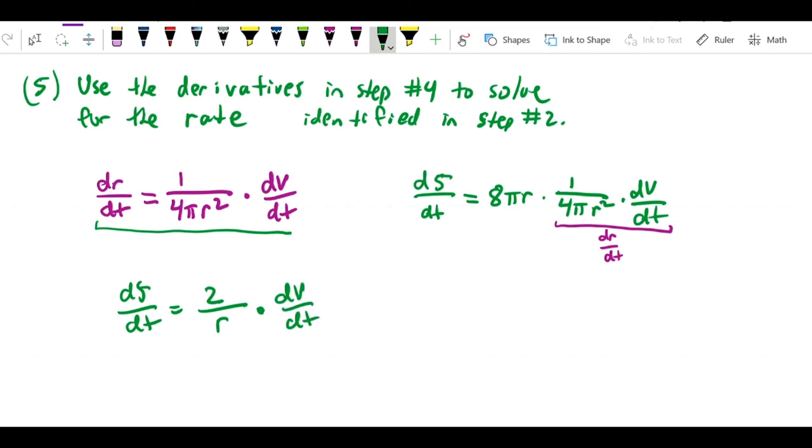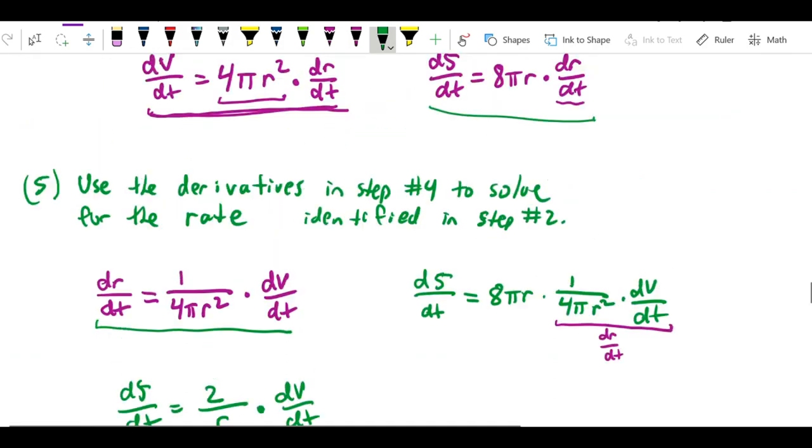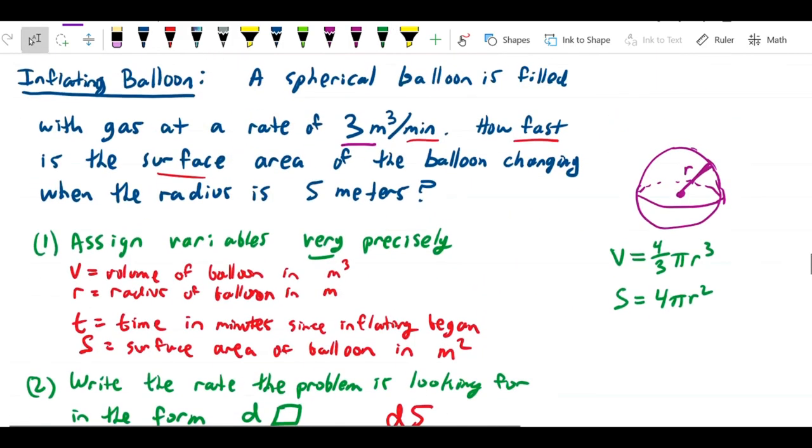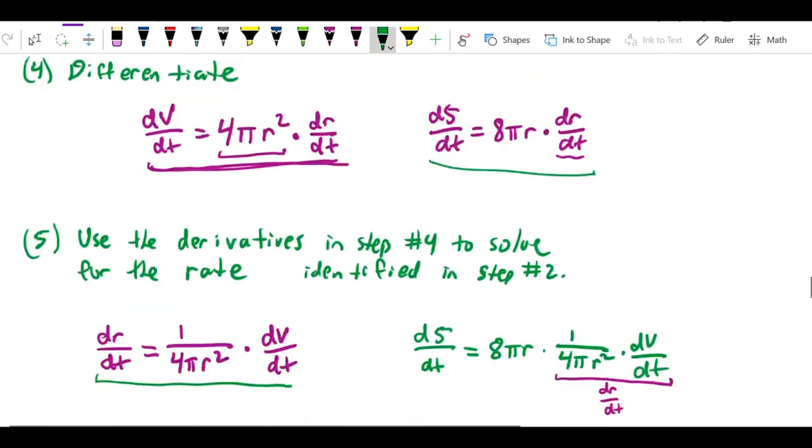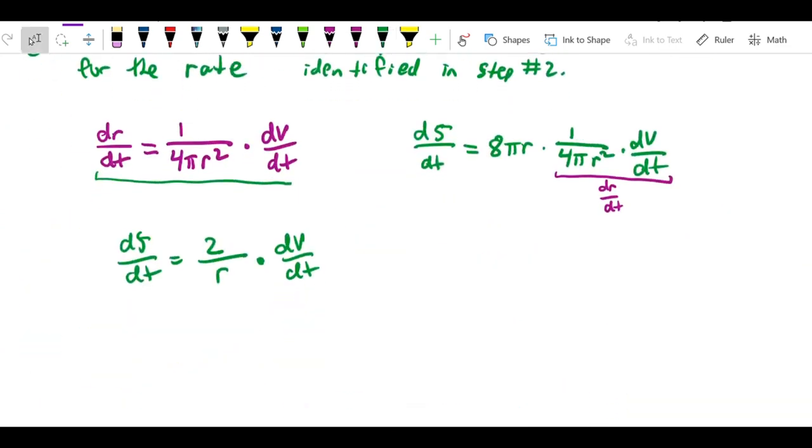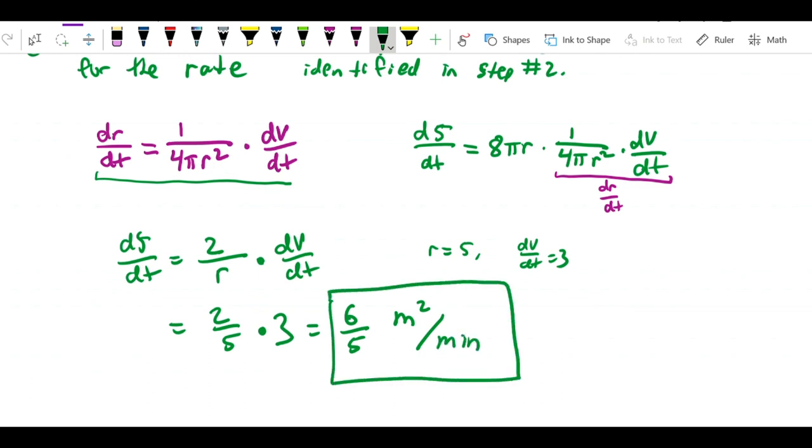Now I really have everything that I need in order to solve the problem. What we're told is that we're interested in the rate of change when the radius is 5 meters. In other words, when r equals 5, and we also know that the constant rate of dV/dt is 3. So I can simply substitute in r equals 5, and dV/dt equals 3. This gives us 2 over 5 times 3. That gives us 6 over 5, and since we're talking about a rate of change of the surface area, the correct units for this are meters squared per minute. And that's the answer.